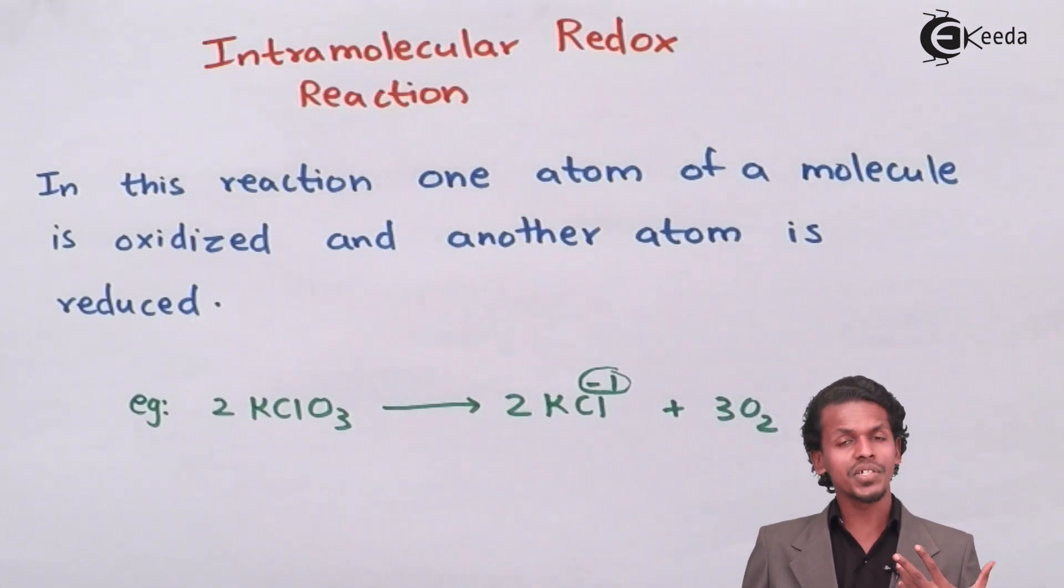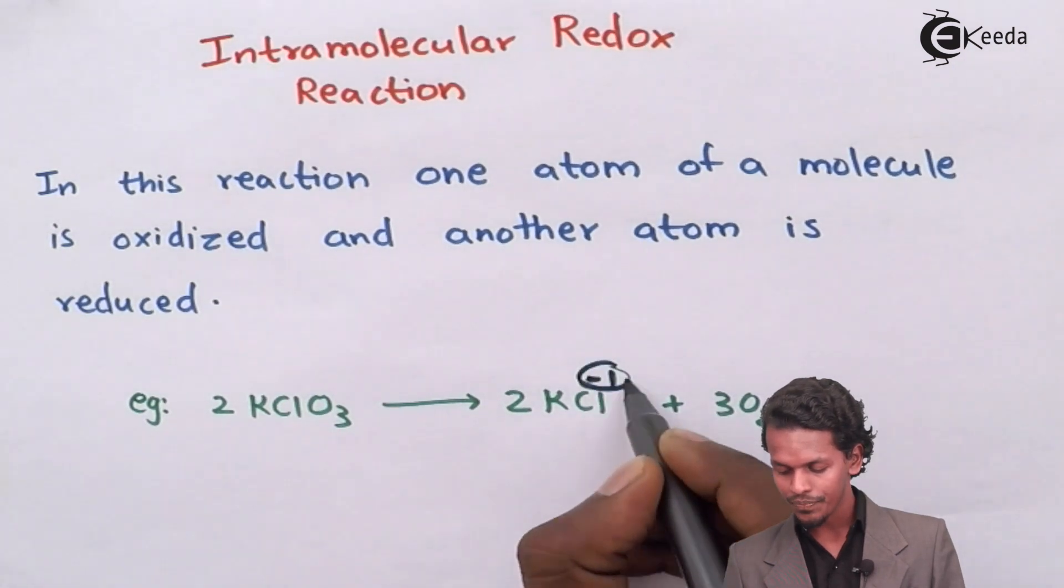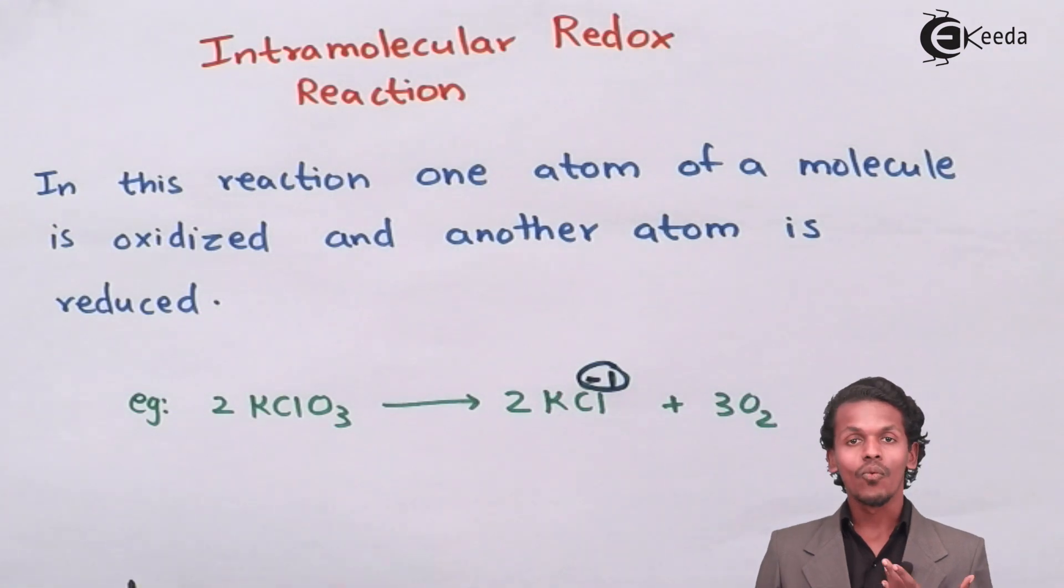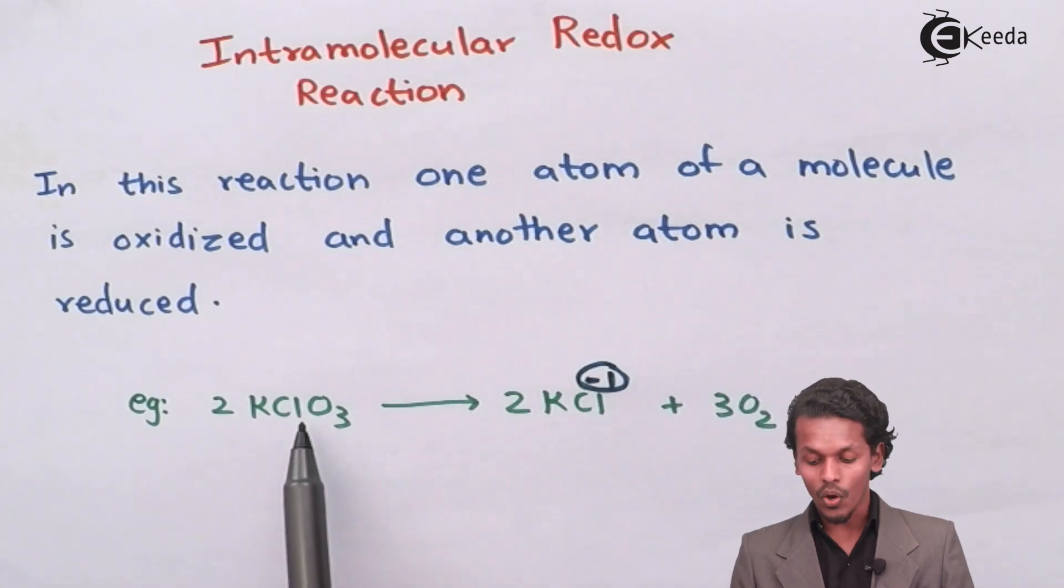But if you observe the oxidation number of chlorine, it is converted into minus one, but originally it has a different oxidation number. So let us first calculate that, and we will compare the oxidation number of oxygen